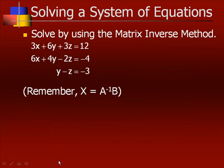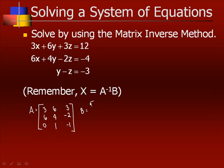Let's practice. Set up the coefficient matrix A = [3, 6, 3; 6, 4, -2; 0, 1, -1] and the answer matrix B = [12; -4; -3]. What we want to do is find A⁻¹ and multiply it by B.